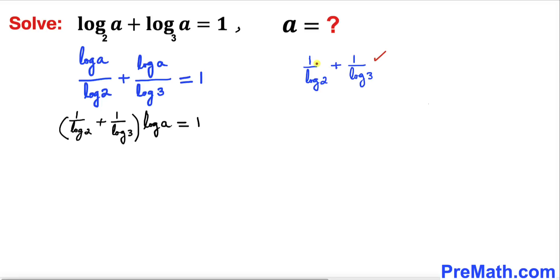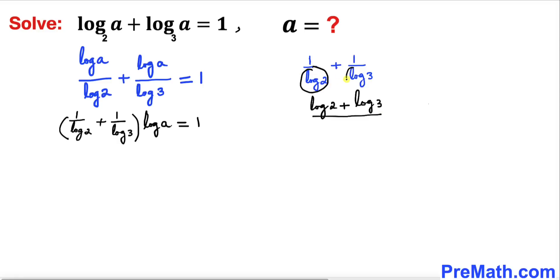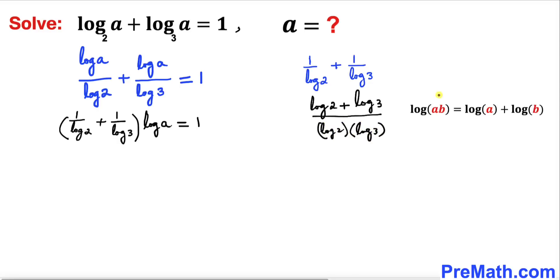Let's add these two fractions using the cross-multiply method. Cross-multiplying gives us 1 times log 2 plus 1 times log 3 in the numerator, which is log 2 plus log 3, divided by log 2 times log 3 in the denominator.